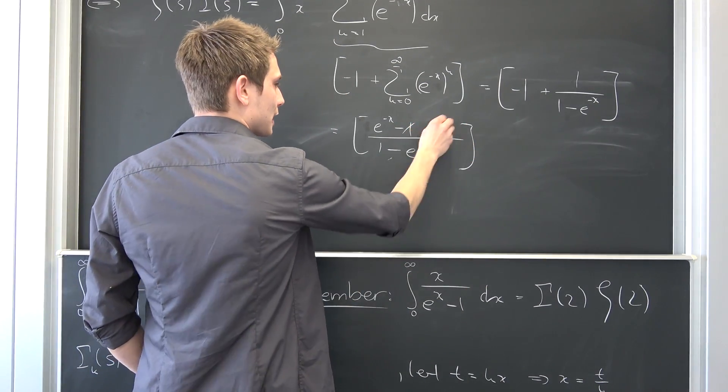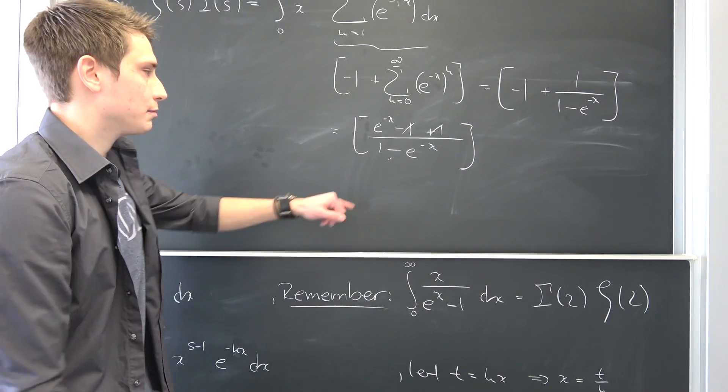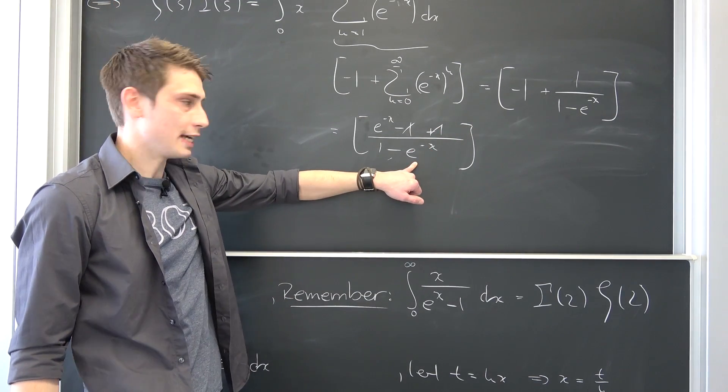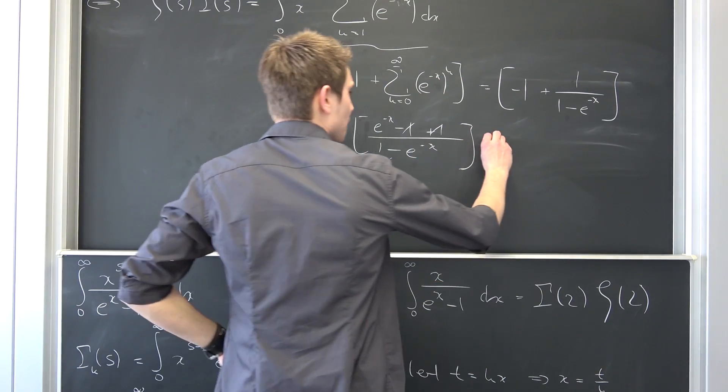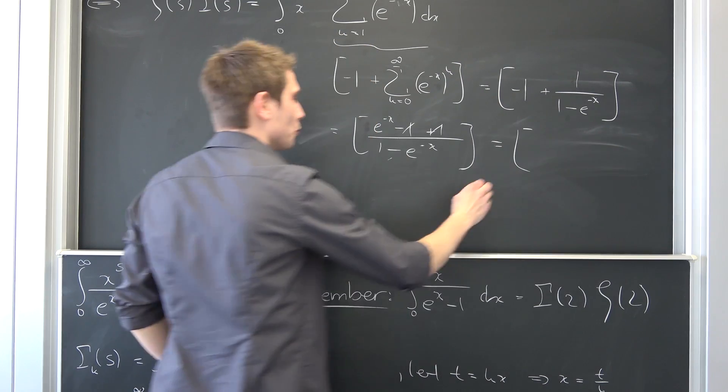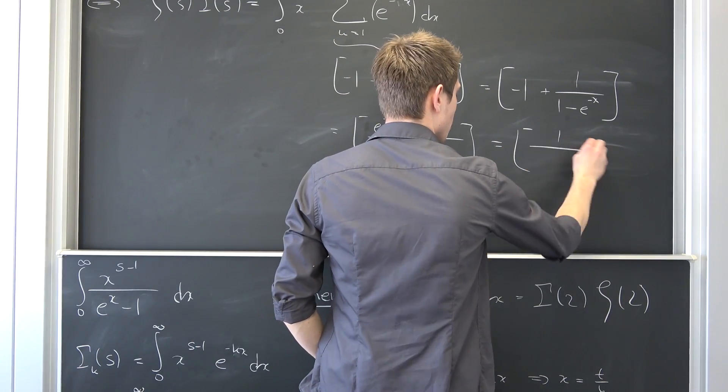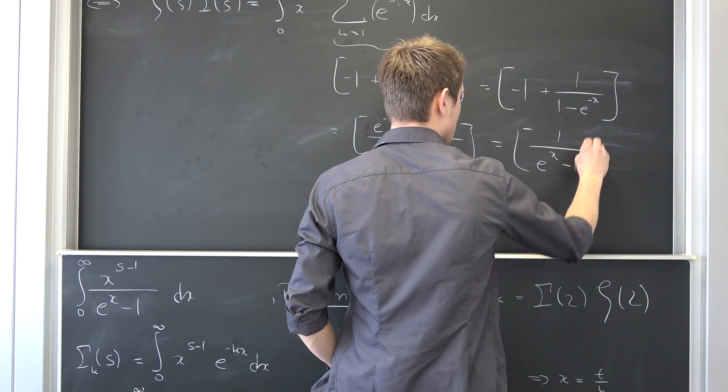Now, actually, we can cancel those two out and either you factor out the e to the negative x on both terms or you advance this fraction by e to the x over e to the x. Whatever you do, it's going to turn out to be 1 over e to the x minus 1.